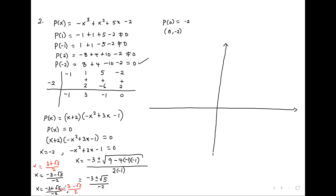With the simplified intercepts: x equals negative 2, then 3 minus root 5 over 2 — since root 5 is about 2 point something, this is a positive number — and 3 plus root 5 over 2, also positive. The y-intercept is negative 2. Looking at the gaps between intercepts, the bigger gap determines the turning point orientation.